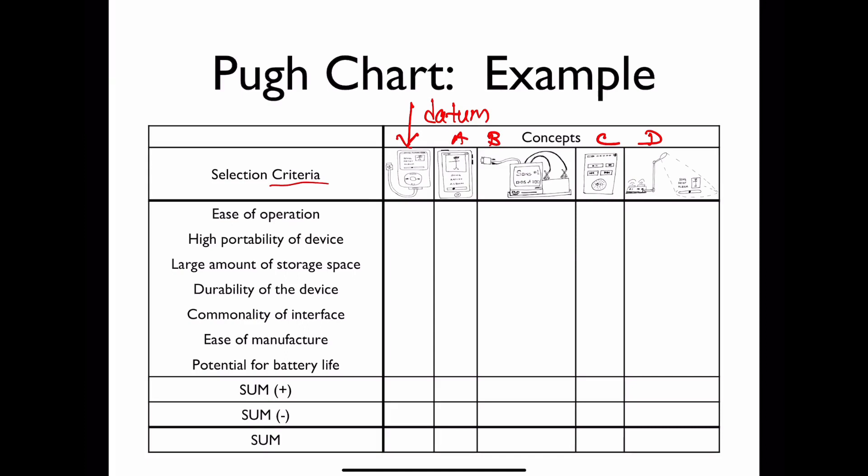And in this example, what we have done is already created a set of criteria that are based upon the performance of this system. And the criteria we've developed are ease of operation, portability, the amount of storage space. And these criteria should be coming from our design requirements, which should be coming from our user and codes and research and all that hard background work that we did before even starting our design. So as we look at this, we're going to take our datum concept and go ahead and fill it in with zeros because that's our base concept.